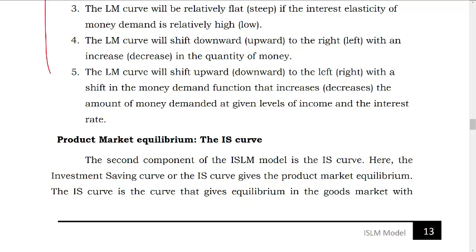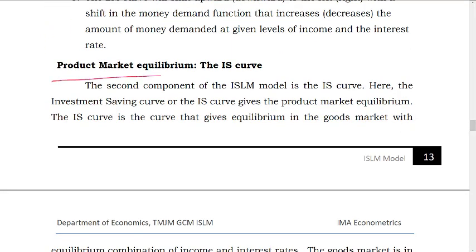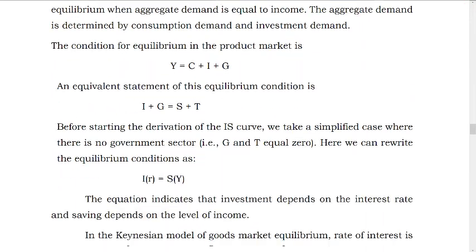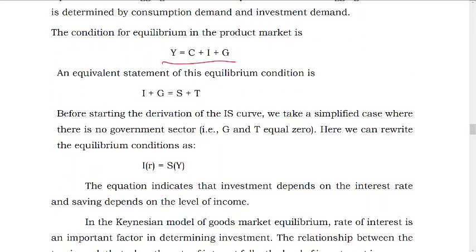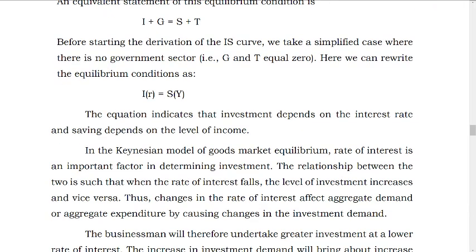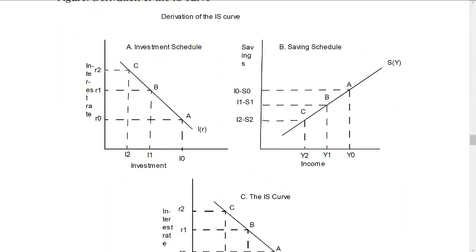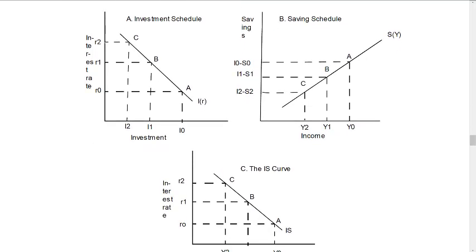Next comes the product market, which we represent in the form of the IS curve. This was the LM curve and this is the IS curve which we are going to study later. The IS curve — investment savings — investment is a function of the rate of interest; savings is a function of the level of income.